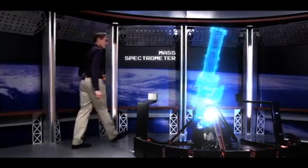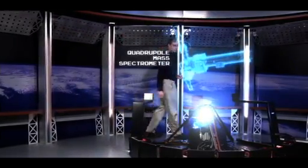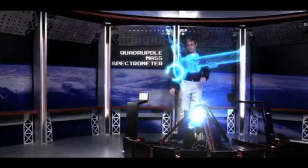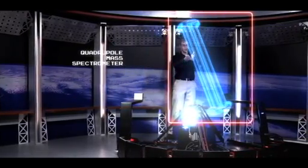Today we'll be looking at a special kind of spectrometer called the quadrupole mass spectrometer. It's called this because of the four long poles that make up the center of the instrument.